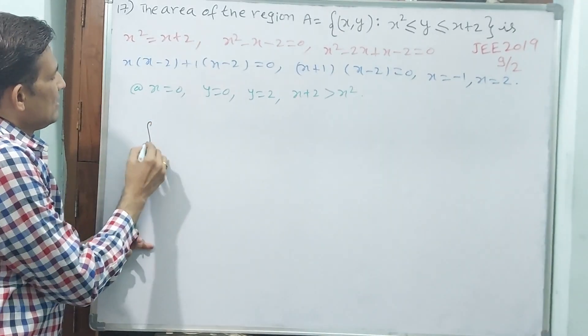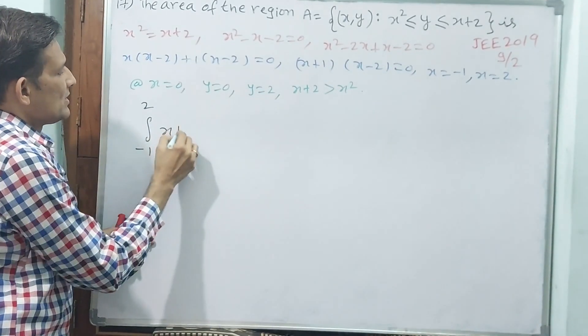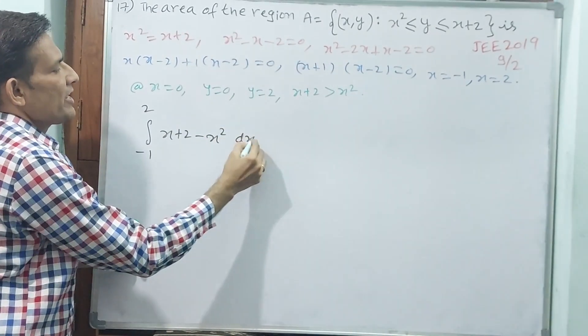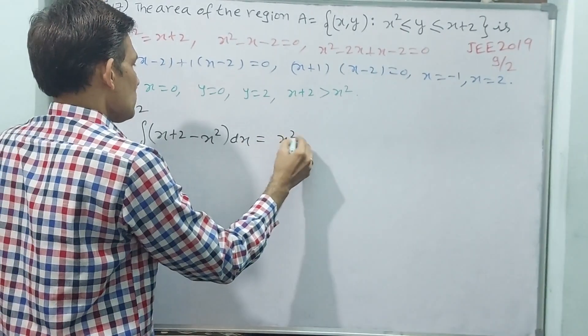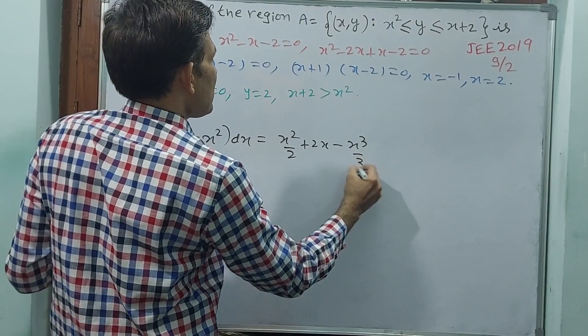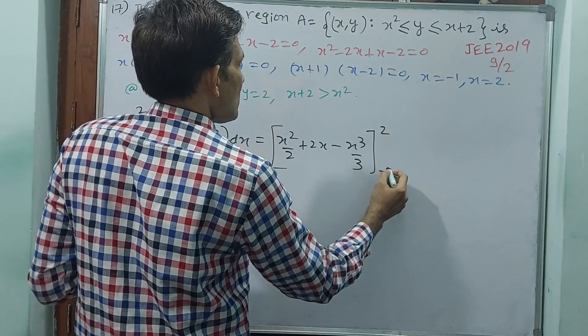You see, integral minus 1 to 2, x plus 2 minus x square dx. That is equal to x square by 2 plus 2x minus x cube by 3, minus 1 to 2.